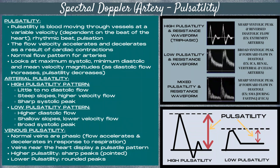Venous pulsatility is a bit different. Normal veins are non-pulsatile — they're phasic, meaning the flow accelerates and decelerates in response to respiration, although veins located very near the heart can display a pulsatile pattern. On spectral Doppler ultrasound, a venous high pulsatility signal will show sharp pointed peaks, whereas a lower pulsatile venous signal will display rounded peaks. For veins, it's normal to have a lower pulsatility pattern with rounded peaks, unless it's a vein near the heart, in which case you'll see sharp pointed peaks.